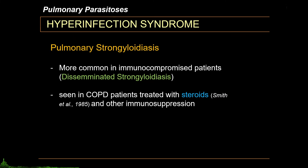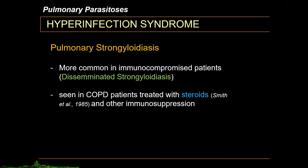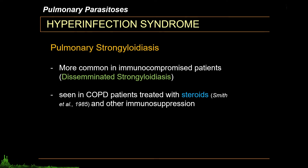Pulmonary strongyloidiasis is part of the disseminated strongyloidiasis spectrum, and is usually seen in immunocompromised patients. Hyperinfection syndrome happens when the body can no longer control the Strongyloides infection. Therefore, strongyloidiasis may be seen in almost all parts of the body, including the lungs.